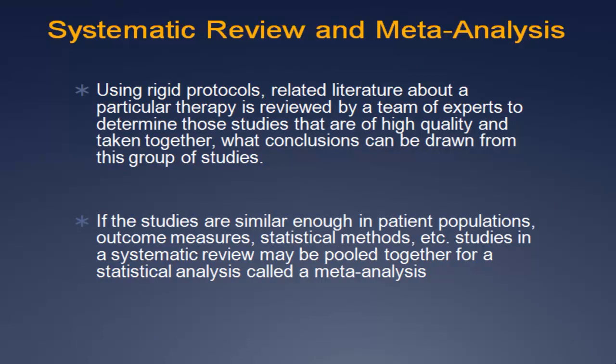Now we have several ways of looking at effectiveness, including the number needed to treat, the effect size, and the minimal clinically important difference. Can we expedite our knowledge by taking advantage of others' expertise? Yes — through the systematic review. Experts in a given area review all available literature on a topic and, using rigid protocols for rating, sort out higher quality studies, pool their evidence, and come up with summary conclusions. If the patient populations, outcome measures, and statistical methods are the same, a statistical pooling can be performed called a meta-analysis.